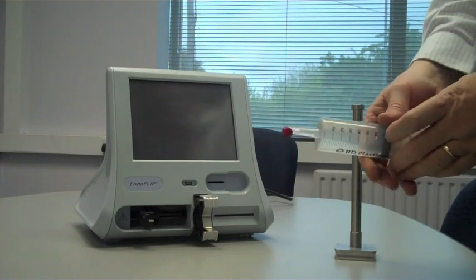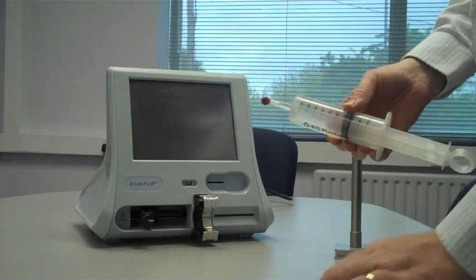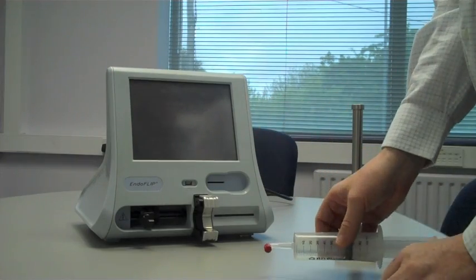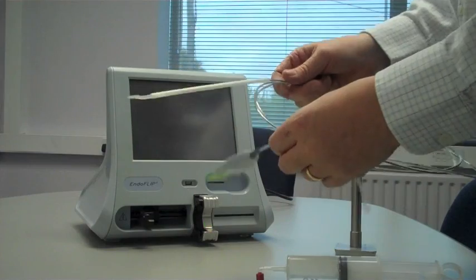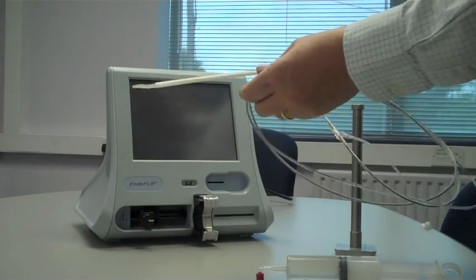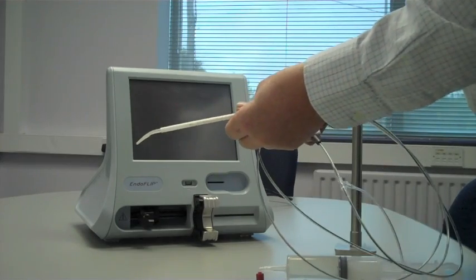The EndoFlip catheter comes in two parts. There's a pre-filled syringe and the catheter itself. The catheter itself comprises of a series of electrodes which allow cross-sectional area to be measured.